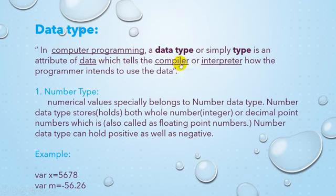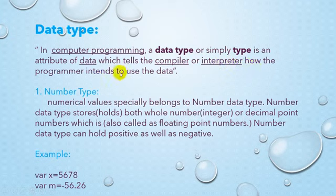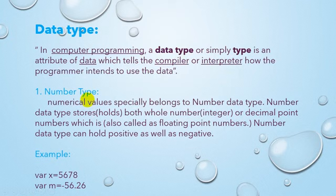The compiler or interpreter understands on the basis of data type how to handle the data. So the first data type we will see is the Number data type. All numerical values belong to the Number data type. Numerical values means all the values which belong to number data type.